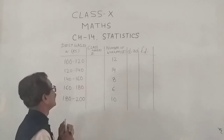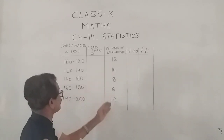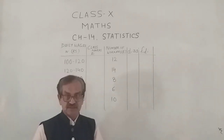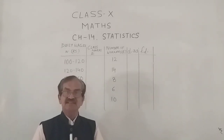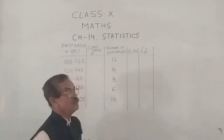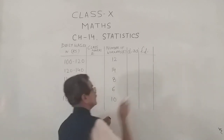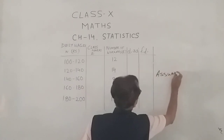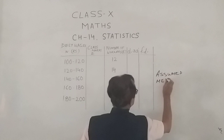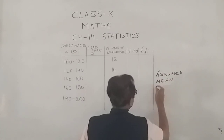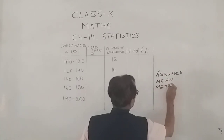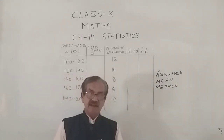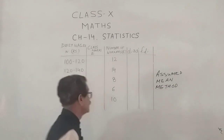However, if we see here, we have some bigger numbers and the class marks are also going to be larger. So we are going to use the second method called the assumed mean method, also called the shortcut method. This will reduce the calculations of calculating the mean.